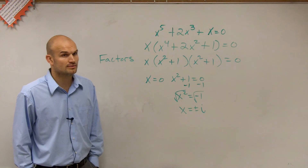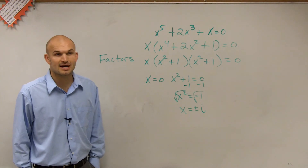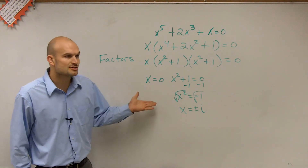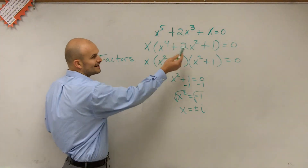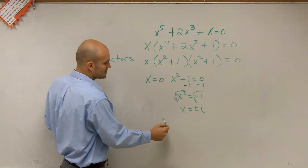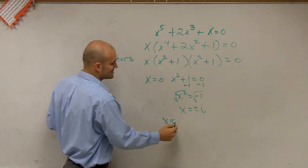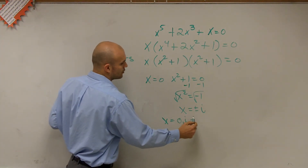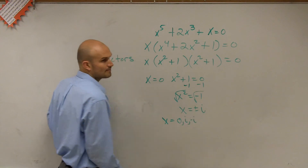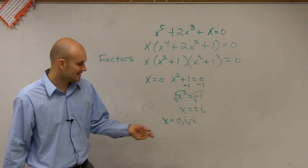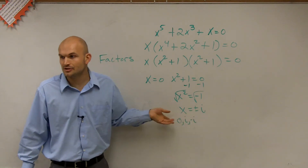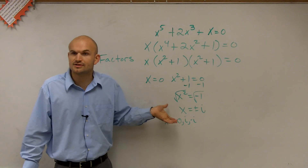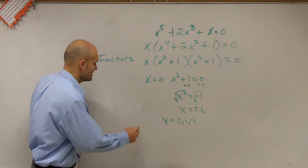Remember, the square root of negative 1 we represent as i. So ladies and gentlemen, what we have now is when I say solve, x has to equal zero, i, or negative i. These are the values that when we set the polynomial equal to zero, those are the values of x.